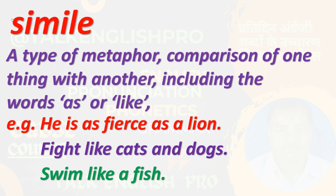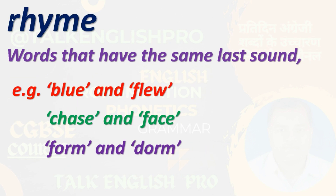Rhyme refers to words that have the same last sound. Rhyming words, which match in their ending sounds, are placed at the end of sentences or phrases — this is called 'tuk bandi' in Hindi. For example: 'blue' and 'flu' share the same sound despite different spellings. Also: 'chase' and 'face,' and 'form' and 'dorm' — all share the same last sound. This is called rhyme.